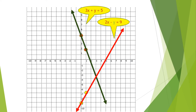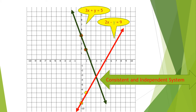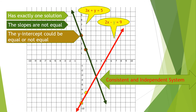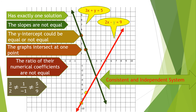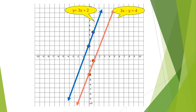From our previous examples, there are different types of systems of linear equations based on the graph. The first is intersecting lines, called the consistent and independent system, which has exactly one solution. The slopes are not equal, the y-intercepts could be equal or not equal, the graphs intersect at one point, and the ratio of their numerical coefficients are not equal.